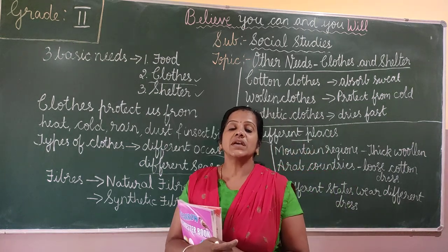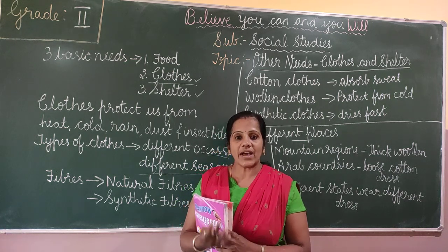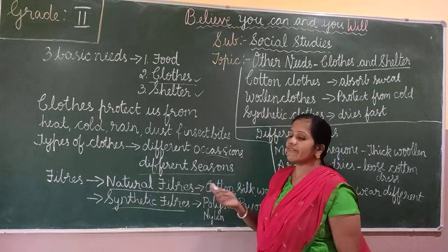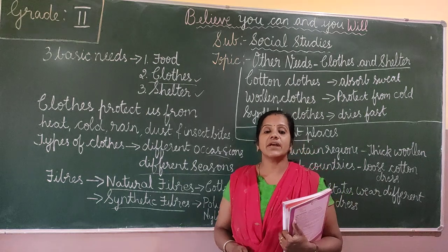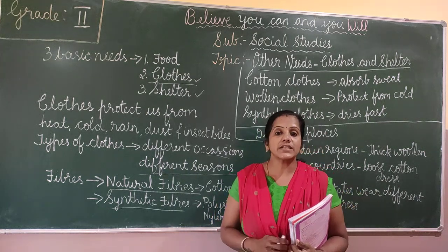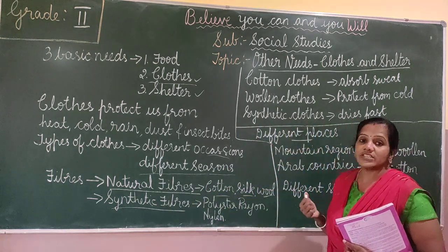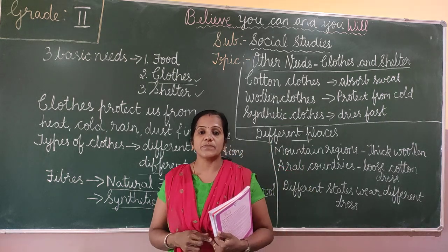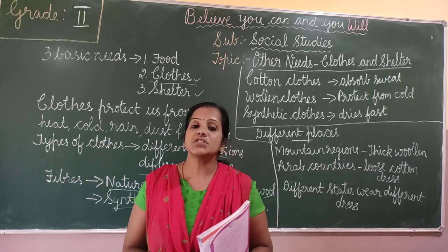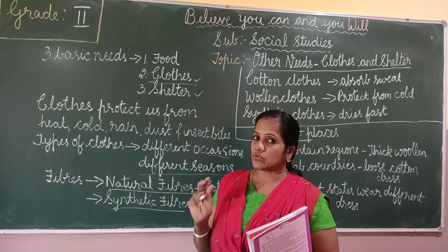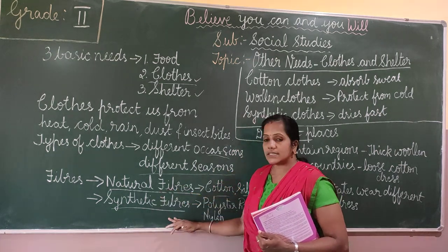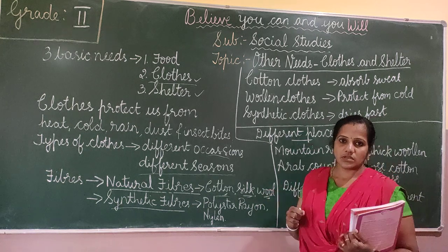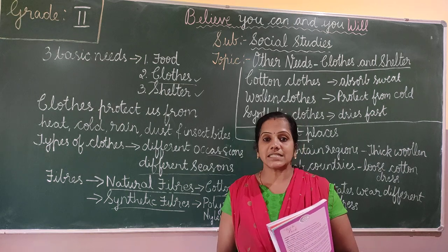These clothes are made from fibers and we have two types of fibers — one is natural fiber and the other is synthetic fiber. The natural fibers are cotton, silk, wool, and jute. These are called natural fibers because we get them from plants and animals. Cotton we get from the cotton plant; silk we get from the silkworm; wool from sheep; and jute from the jute plant.